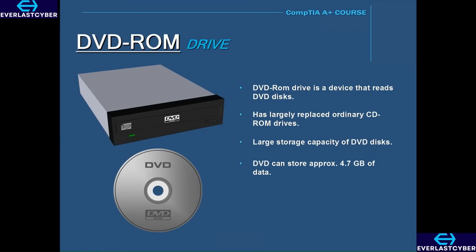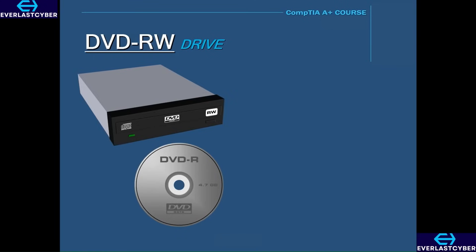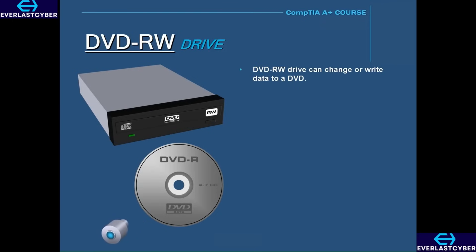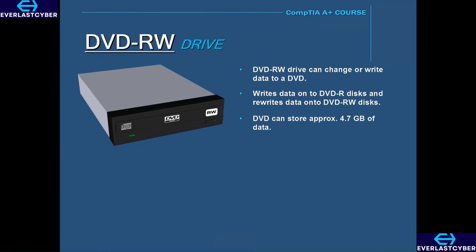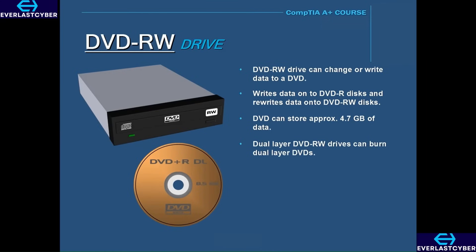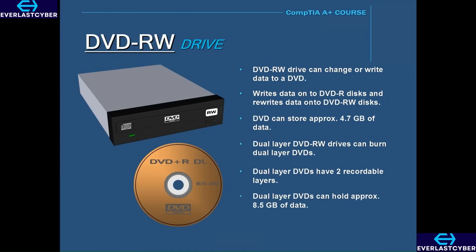Like a CD-RW drive, there is also a DVD-RW drive, and this can change or write data onto a DVD. It can write data onto DVD-R discs and rewrite data onto DVD-RW discs. A DVD disc can hold approximately 4.7 gigabytes of data. Some DVD burners have the capability of burning dual-layer DVDs, called dual-layer DVD-RW drives. Dual-layer DVDs have two recordable layers, where they can store nearly twice the amount of data as a regular DVD, holding approximately 8.5 gigabytes of data.